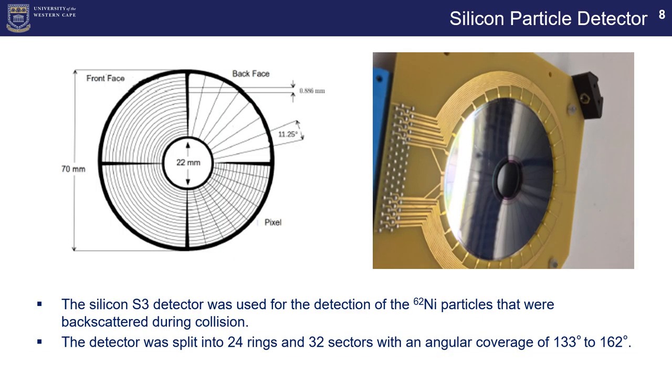So now we take a look at the silicon detector, the detector that we'll be using to detect the particles. This detector was used for the nickel 62 particles and were placed at a backward angle, backward scattering angle during the collision of the target and the projectile. The detector was split into 24 rings and 32 sectors, and the angular range for the rings, angular coverage being 133 degrees to 162 degrees.